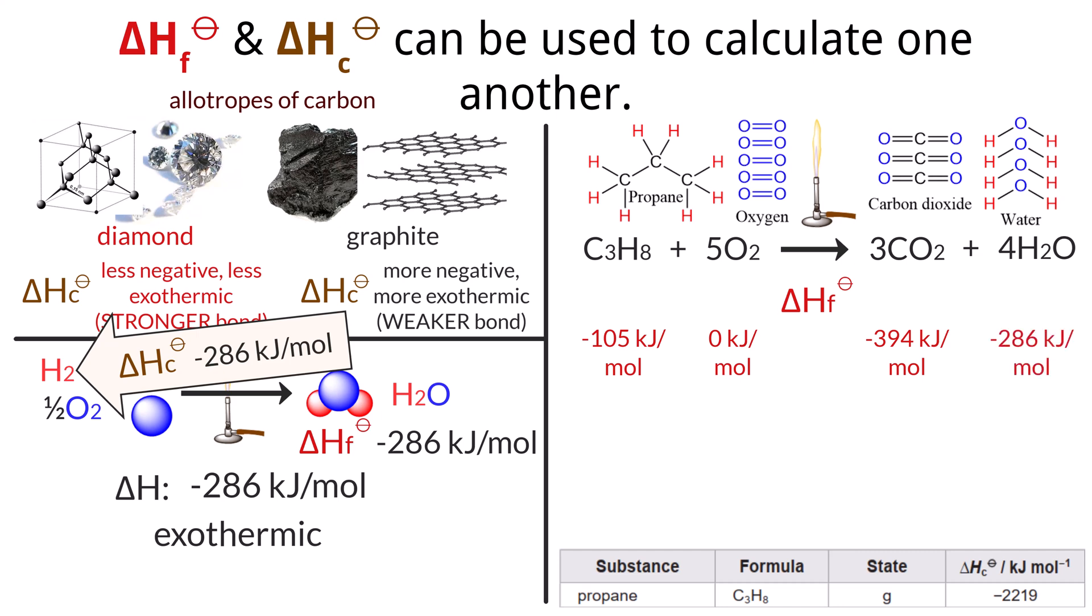To calculate the change in enthalpy, we take the sum of the products minus the sum of the reactants, which would come out to be 3 times negative 394 kilojoules per mole plus 4 times negative 286 kilojoules per mole minus 105 kilojoules per mole plus 0 equals negative 2,221 kilojoules per mole. Comparing that to the enthalpy of combustion delta H sub C naught data for C3H8 equals 2,219 kilojoules per mole, we see that it is roughly equal.